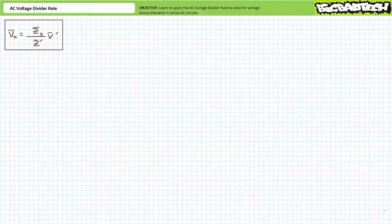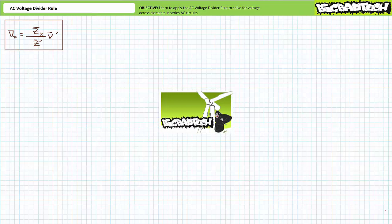Bottom line up front: the AC voltage divider rule is the DC voltage divider rule using phasors. I cannot make it much simpler than that. This lecture therefore operates under the presumption the viewer is intimately familiar with the DC voltage divider rule from the basic electronics one DC circuit analysis playlist available at the Big Bad Tech channel. If you haven't watched that lecture yet or don't recall its contents, please take the time to do so now.